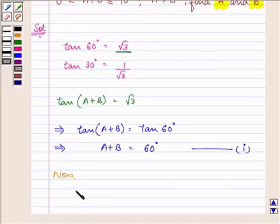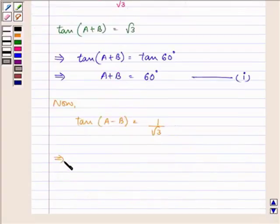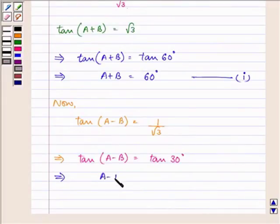Now, we are given that tan(A-B) is equal to 1 by root 3, but 1 by root 3 is equivalent to tan 30 degrees. So, this implies that tan(A-B) will be equal to tan 30 degrees. And this further implies that A minus B is equal to 30 degrees. Let it be the second equation.